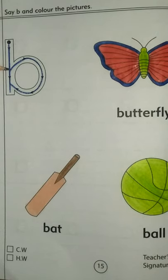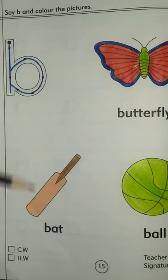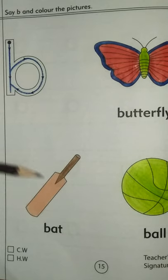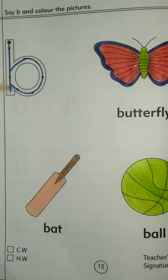Now again. B is for bat. B is for bat. B is for bat. Very good.